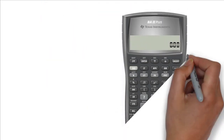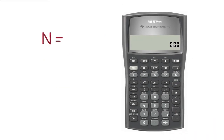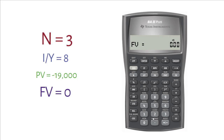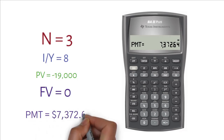Now, in your financial calculator, enter n equals 3 by pressing 3 first and then press n. Similarly, enter 8 in i over y. Enter 19,000 as negative in PV. Always remember that PV value is a negative number in a financial calculator. If you forget to put PV as a negative number, the calculator might give you an error message most of the time. FV equals 0 since after the third year you pay off the loan in full. Once you have entered all the values except for PMT, press CPT and then press PMT. So you get PMT equals 7372.64.